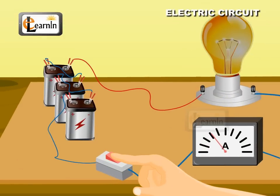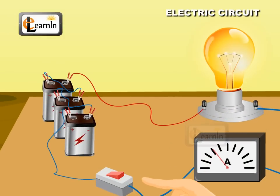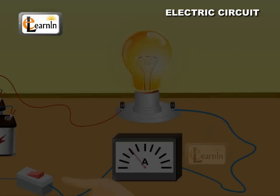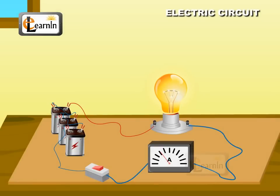If the circuit is closed by operating the key, the instruments like the electric bulb work as the current flows through them. That means the electric bulb in the circuit glows if the current is switched on.